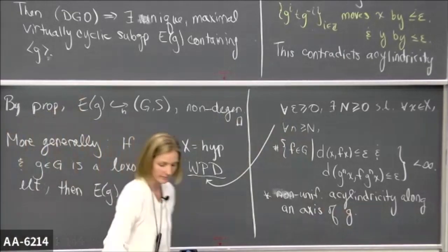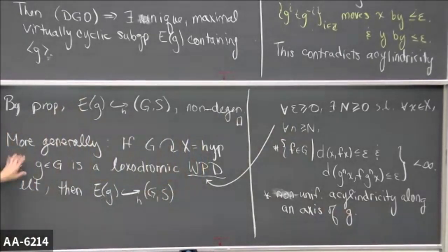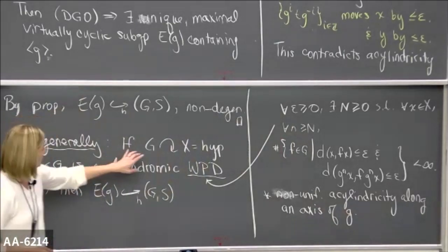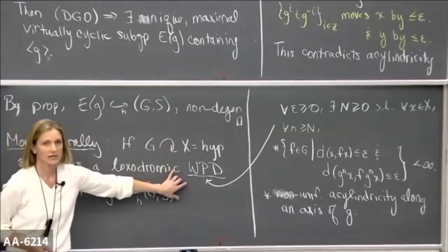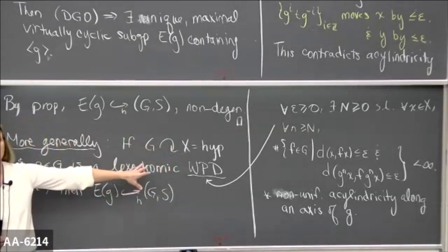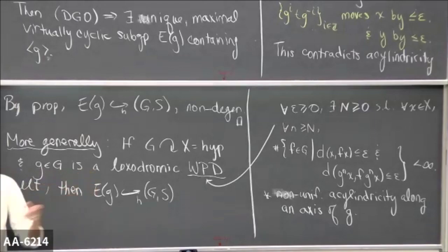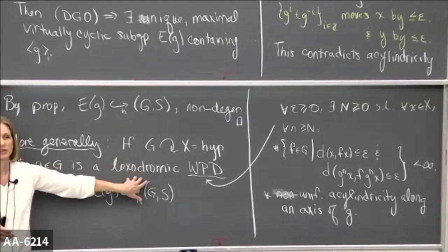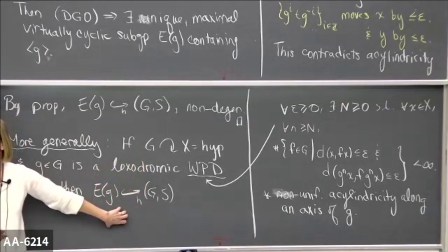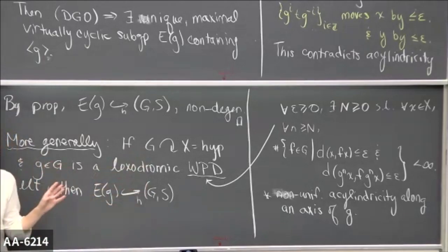So what this more general statement says is: if you have a group acting on a hyperbolic space, and it's not virtually cyclic, and you have a loxodromic WPD element, then the group is acylindrically hyperbolic. This is usually how groups are proved to be acylindrically hyperbolic. Proving that an action is acylindrical is difficult — it's very difficult — so if you give me a group and I want to know if it's acylindrically hyperbolic, what I'm going to look for is an action on a hyperbolic space with a loxodromic WPD element. This is just easier to check.